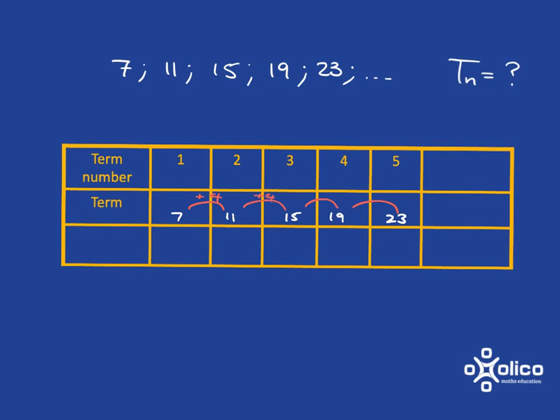From 7 to 11, it's 4. From 11 to 15, it's 4. Again, here it's 4. Again, here it's 4. And that's really nice because we've observed that when we have patterns that jump up by 4 each time, we know that we're going to have a 4n in the formula for the term.